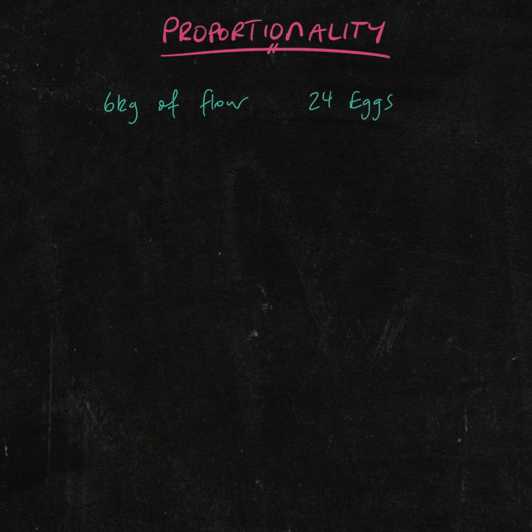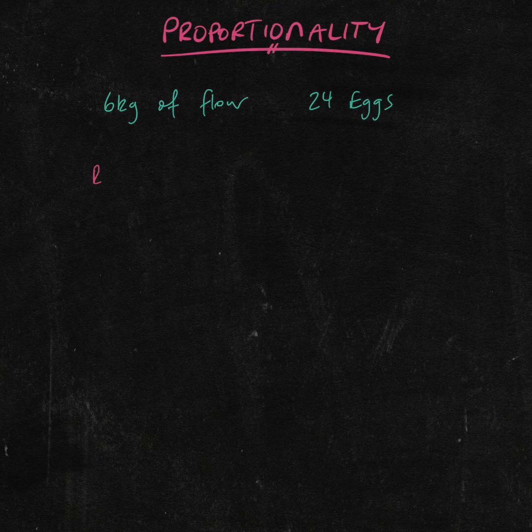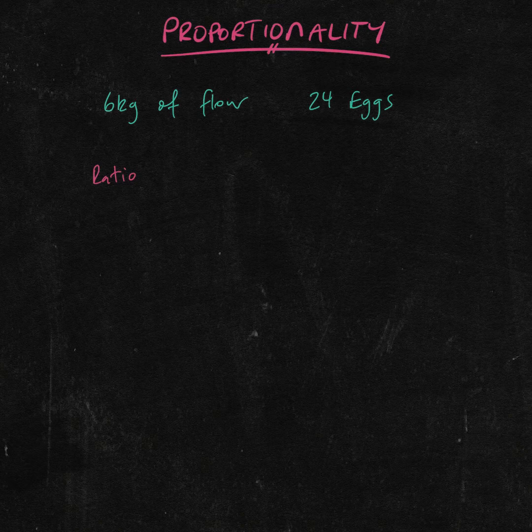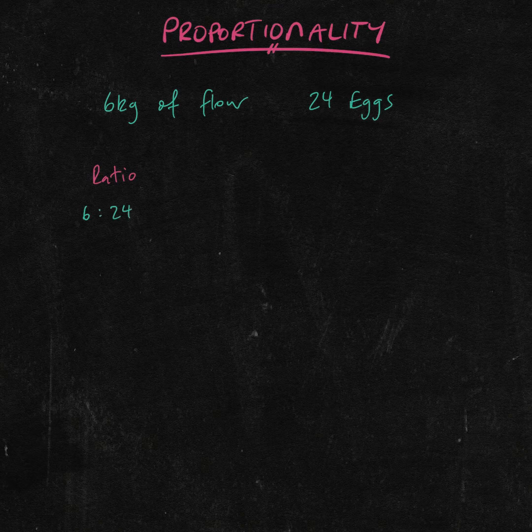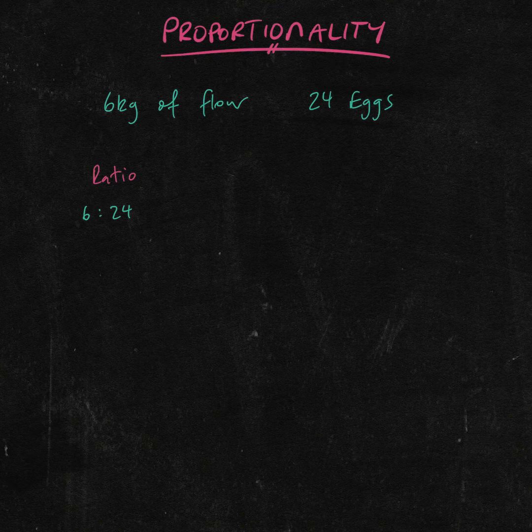So a ratio is a way in which to show the relationship between two quantities. Here we have a relationship between the kilos of flour I need to the number of eggs I need. Now, one way to write this out is in a ratio form. So one way to write out this ratio relationship is to say 6 to 24, and we use a colon to separate the two values.